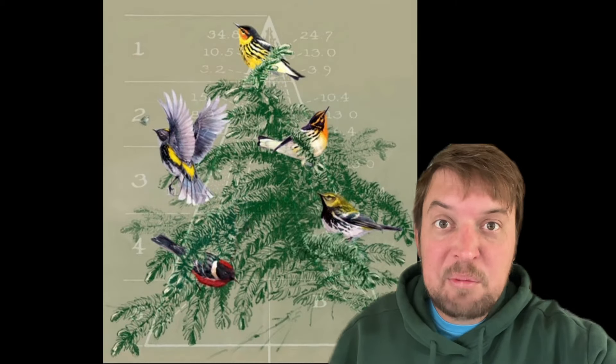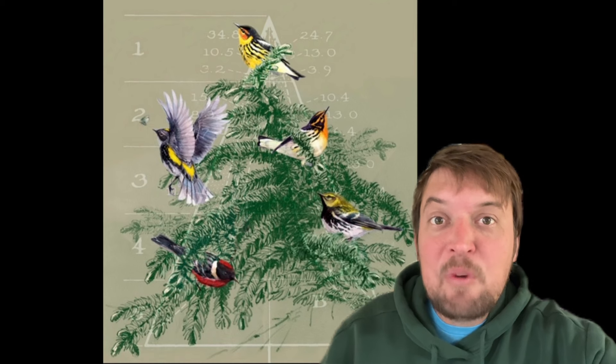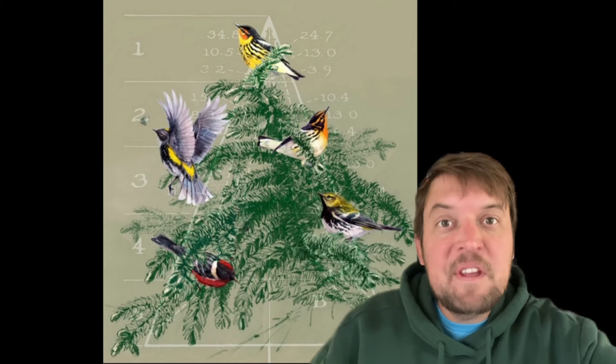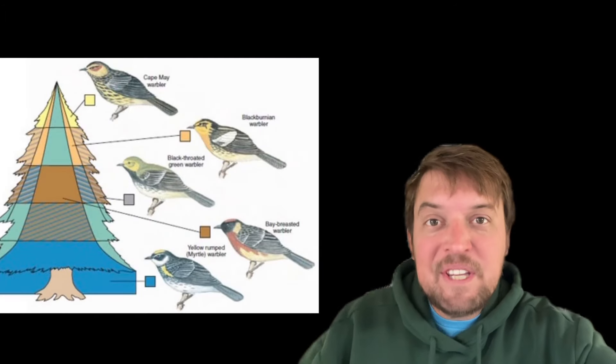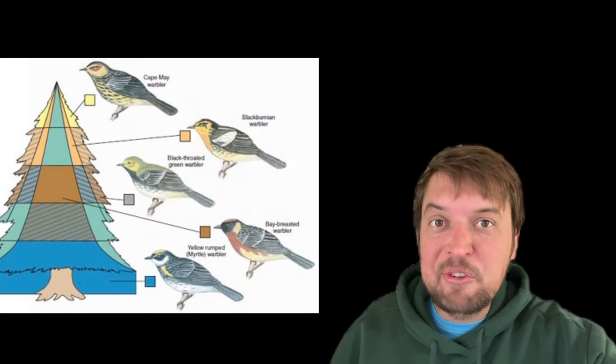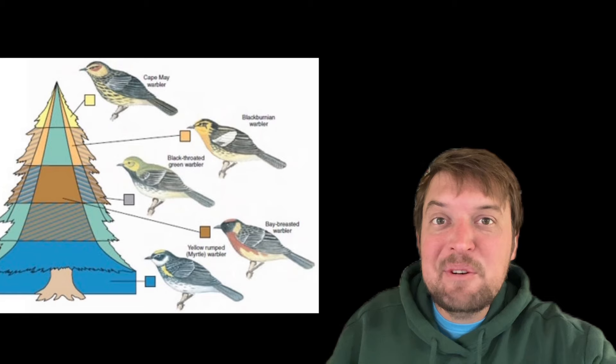All five species of the warblers mostly eat insects and forage in spruce trees. So they seemingly directly compete with each other. But what he found is that different warbler species primarily forage in different parts of the tree.